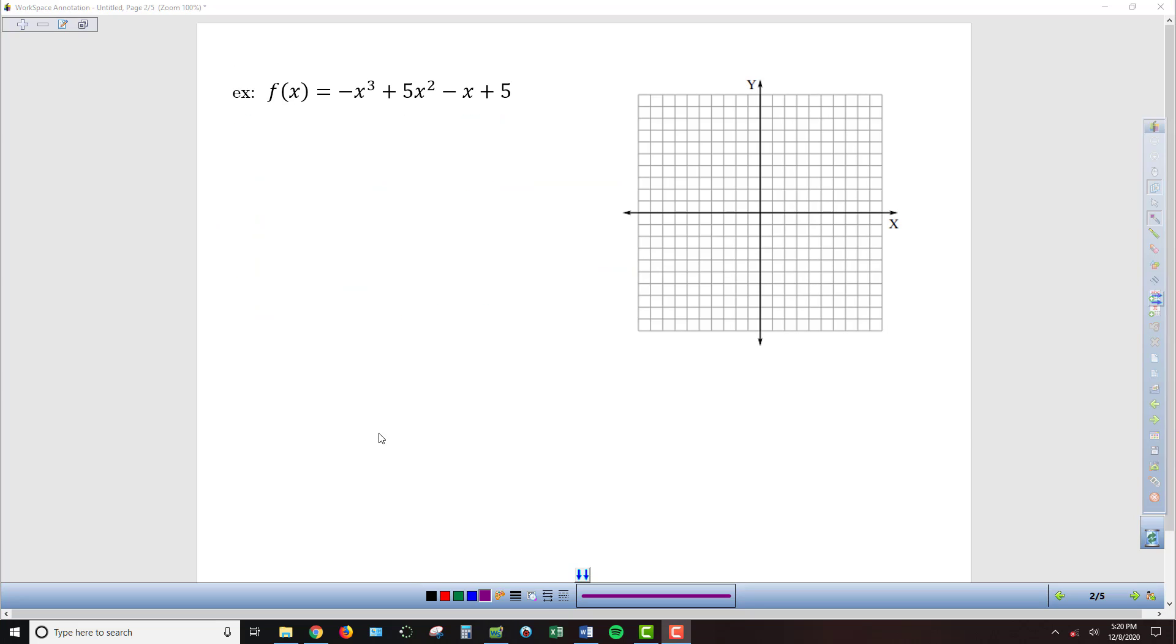For our first function, we've got this cubic function here. Using our leading coefficient test, we can see that our highest exponent is 3, so we're going to have a disco-shaped graph. We have a negative leading coefficient, so our graph is going to be down on the right and up on the left with some sort of change in direction, most likely in the middle.